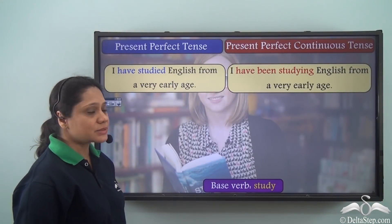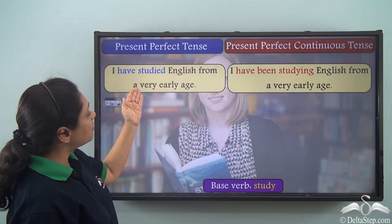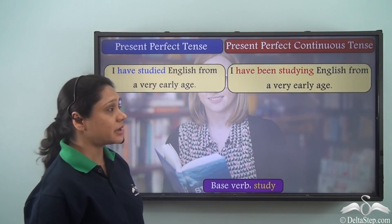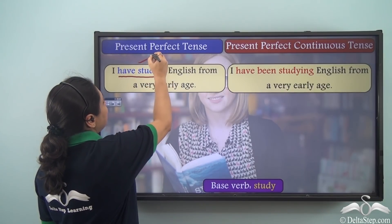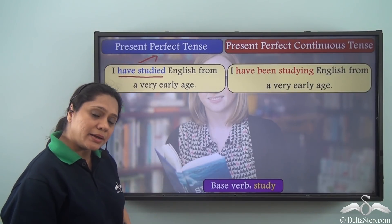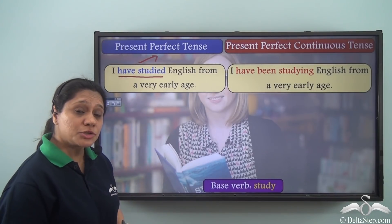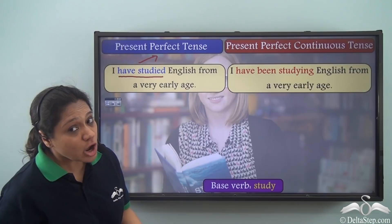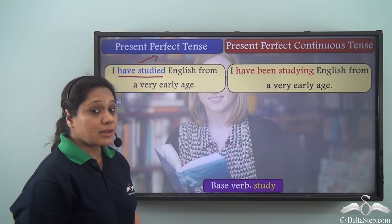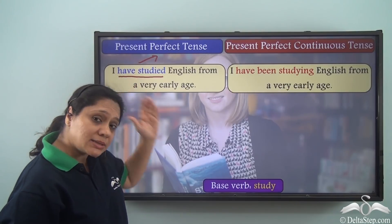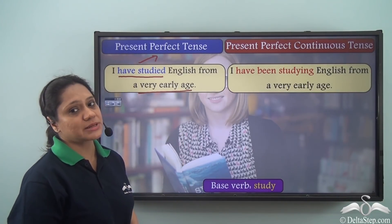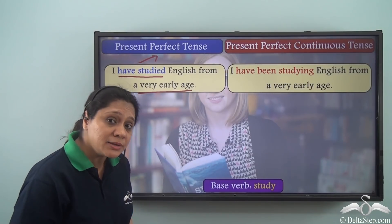Now let us look at these two sentences: 'I have studied English from a very early age' and 'I have been studying English from a very early age.' We know that 'have studied' is in the present perfect tense. It means that I started studying English in the past at a very early age, but I may have stopped it recently, or I may have continued studying it till now.